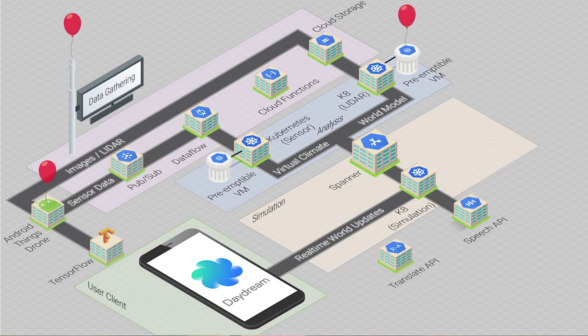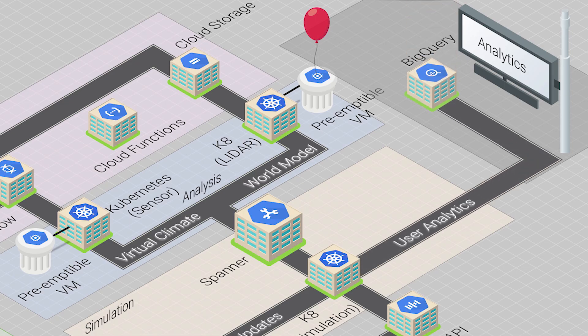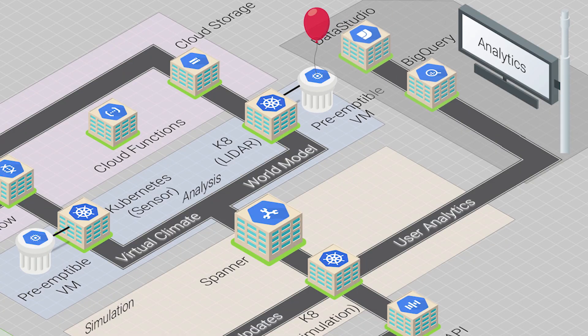The Speech Recognition and Translate APIs ensure everyone in the virtual Earth can communicate in real time, no matter what their native language. And finally, we send all the user analytics to BigQuery. We'll use streaming inserts so we can analyze how people are interacting with our virtual Earth and create a Data Studio dashboard to keep track of current usage patterns over time. There you have it. Do you want to escape a world in which red balloons float on every street corner? Try my virtual world.